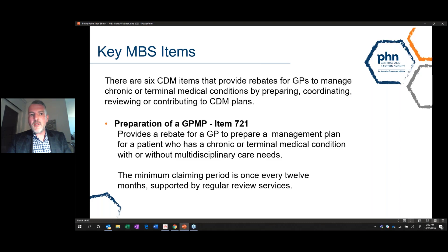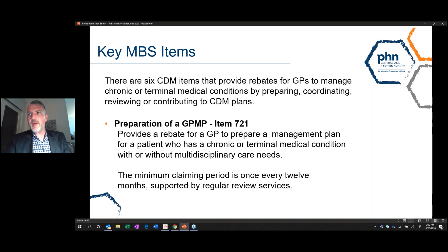We get a lot of inquiries about what the key MBS item numbers are — particularly in new practices, practices that are being purchased, or for people who need to be upskilled, trained, or new staff members. In essence, there are six CDM item numbers which provide rebates for GPs to manage chronic and/or terminal medical conditions by preparing, coordinating, reviewing, or contributing to CDM plans.